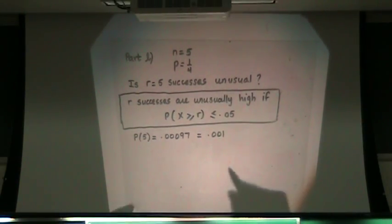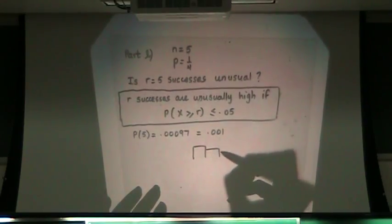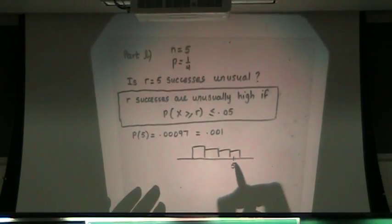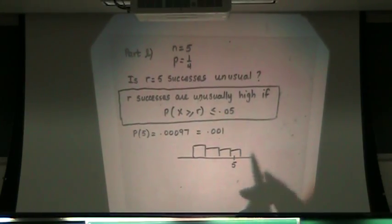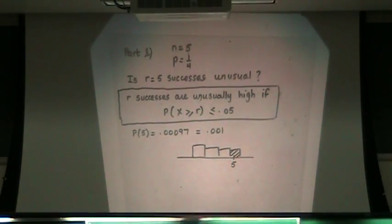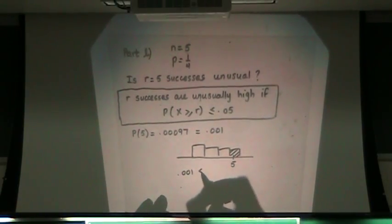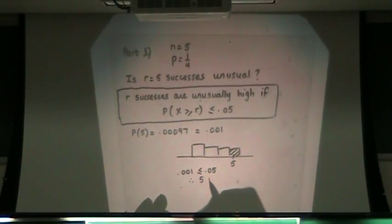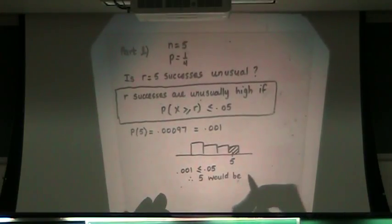We have some binomial distribution and we want to see if five is considered unusual. We have to take five and everything that comes after five, which in this case there's nothing, and see if that's less than five percent. Certainly 0.001 is less than five percent, therefore five would be considered unusual.